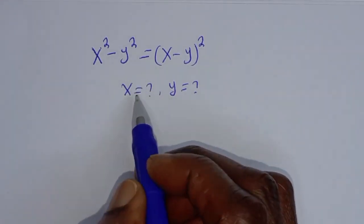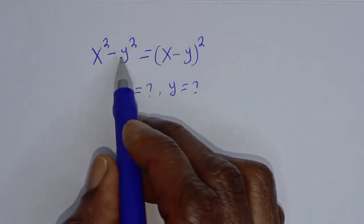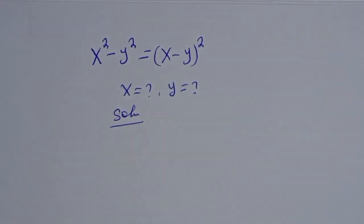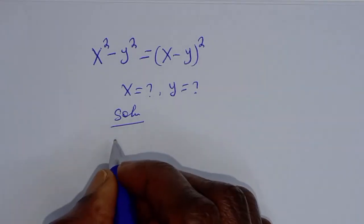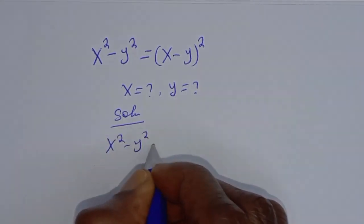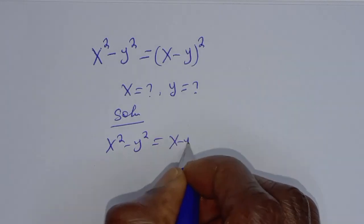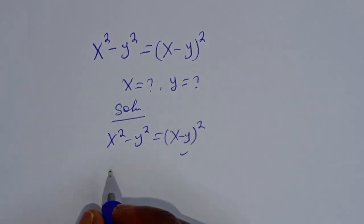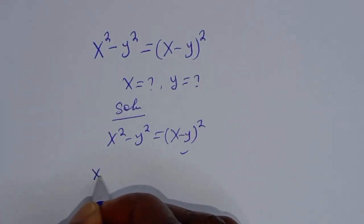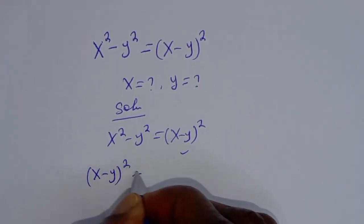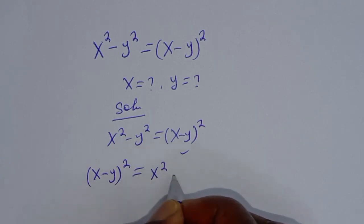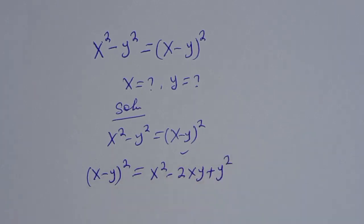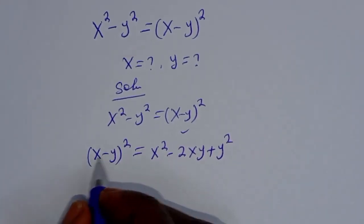How to solve for x and y from this given algebra problem. The solution: we have x² minus y² is equal to (x minus y)². We remember the rule that (x minus y)² is equal to x² minus 2xy plus y².